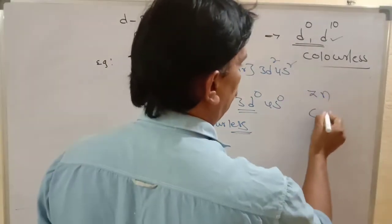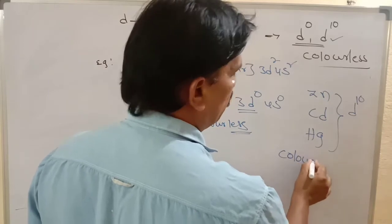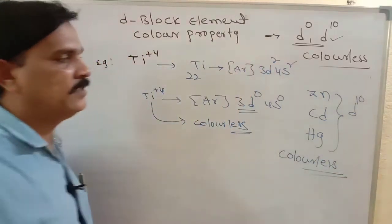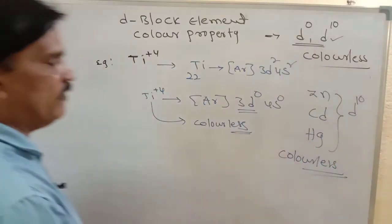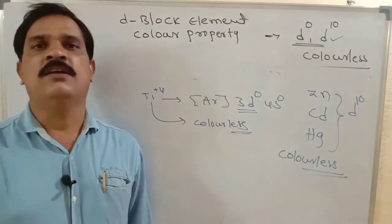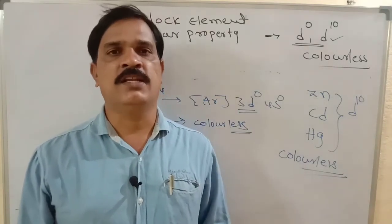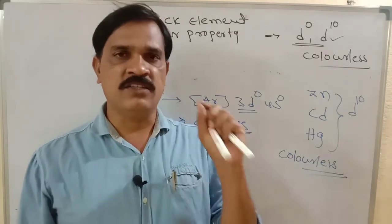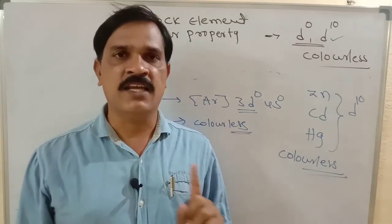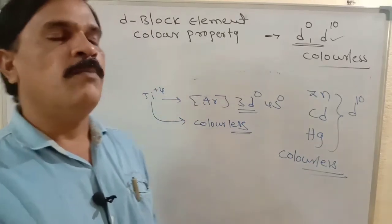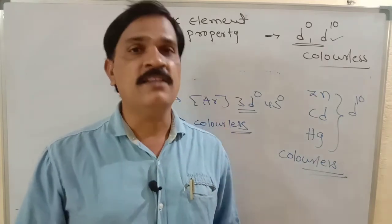So zinc, cadmium, and mercury all have D-10 electronic configuration — they are all colorless compounds, not colored ions. This is the trick for D-0 and D-10 electronic configuration. Anywhere D-0 or D-10 is present, the compound is colorless. Also remember: when removing electrons, always remove from the 4S orbital first, then the 3D orbital.